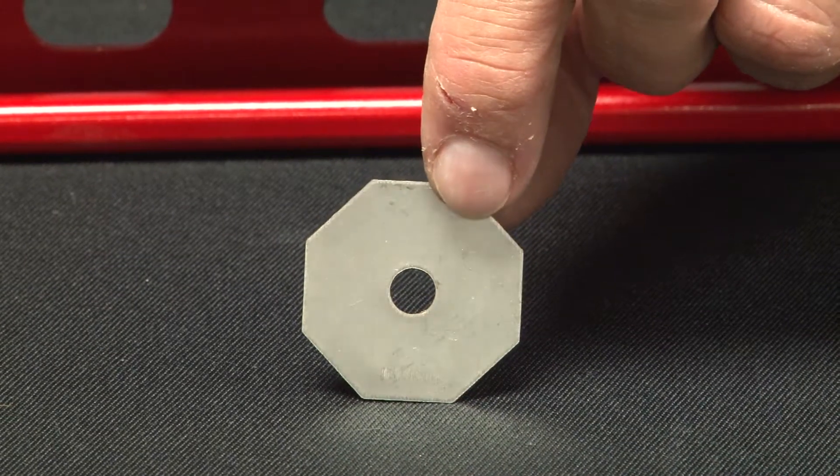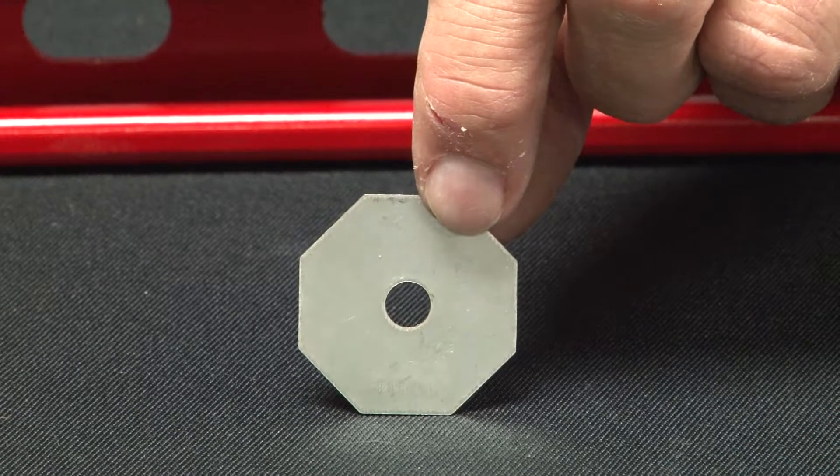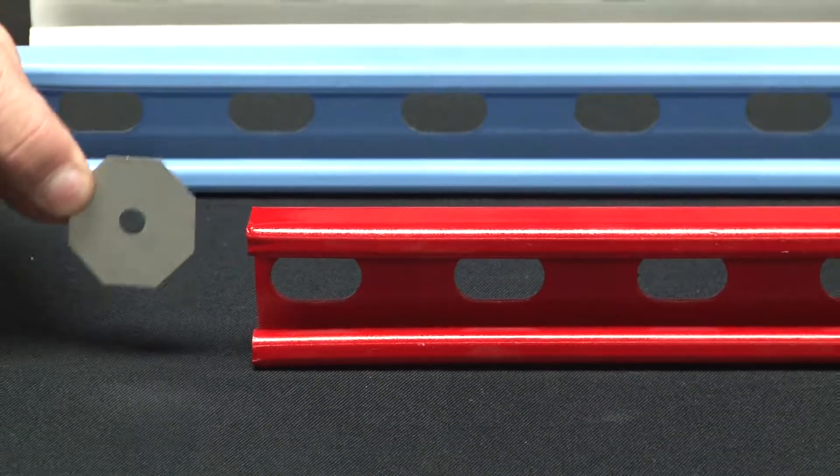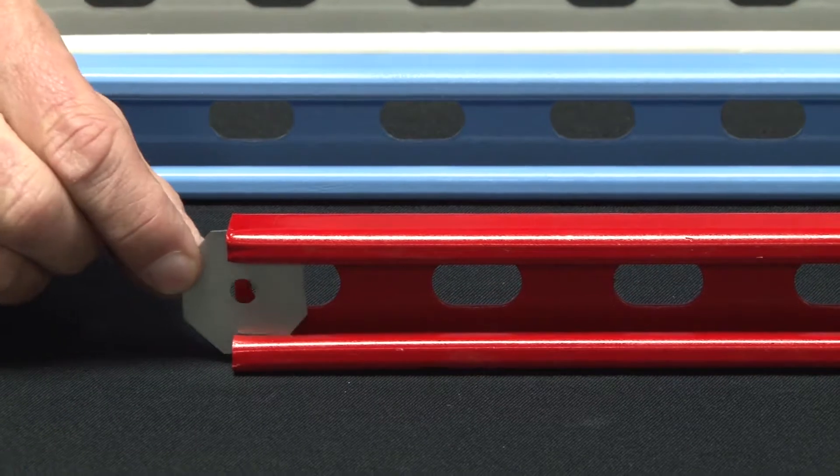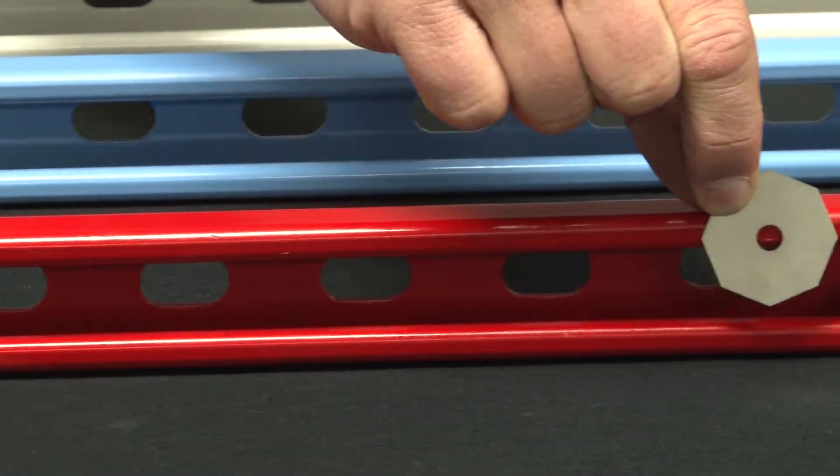They come in 1/4-20, 3/8, or 1/2-inch bolt sizes, and they easily fit inside strut channel, as you can see, and slide to any position that you want within the channel.